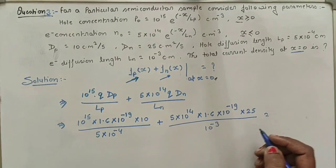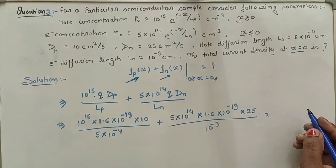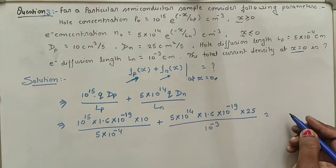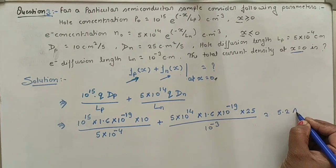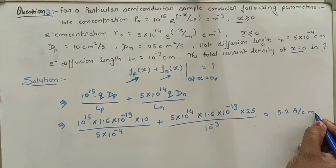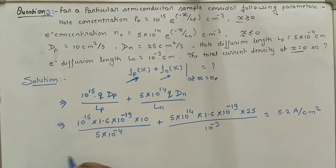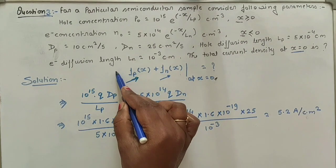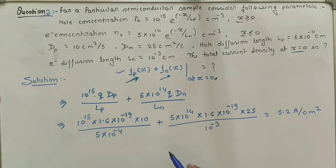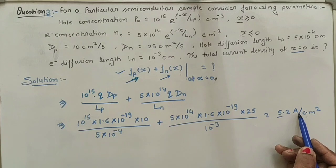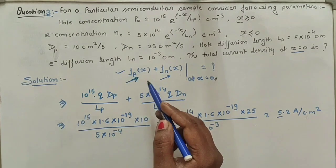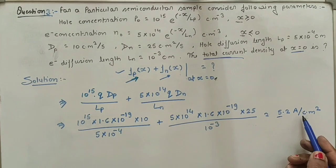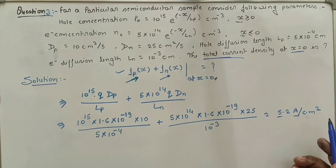Solving this expression gives the answer: 5.2 ampere per centimeter square. That is our answer for this question. The total current density at x = 0 is 5.2 A/cm².